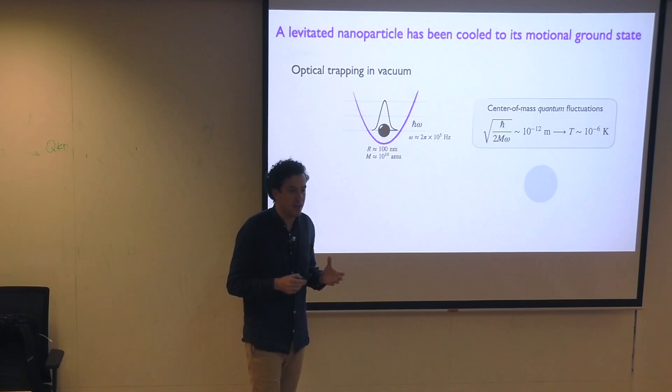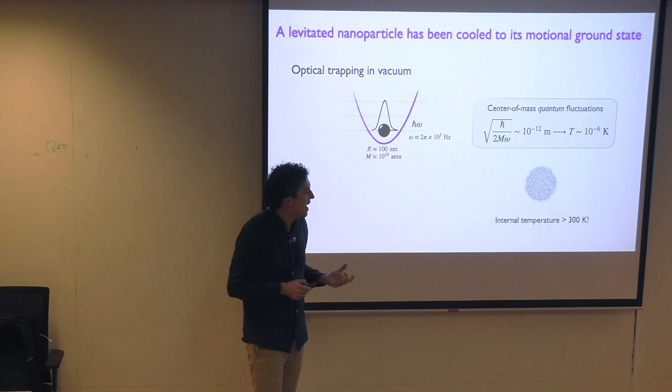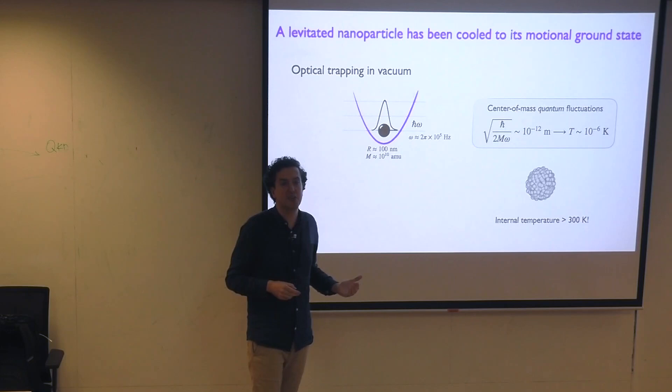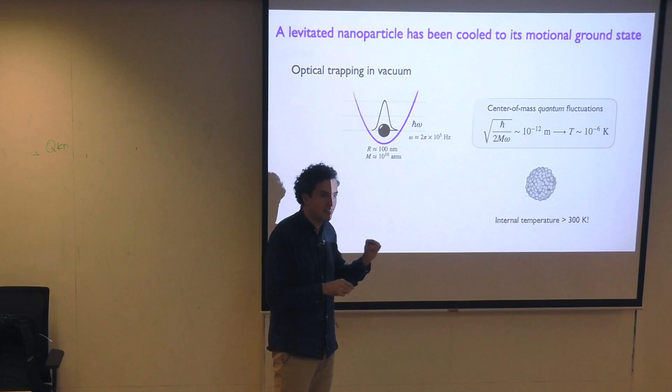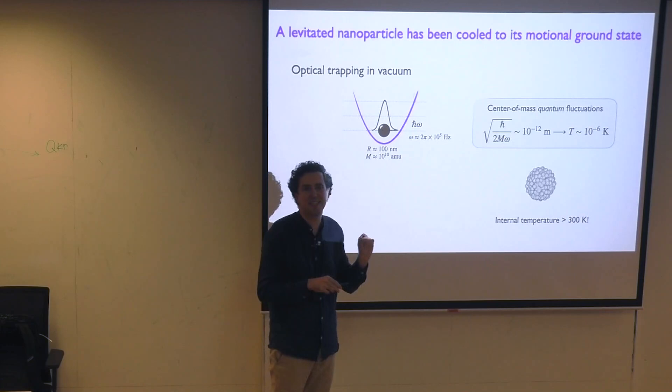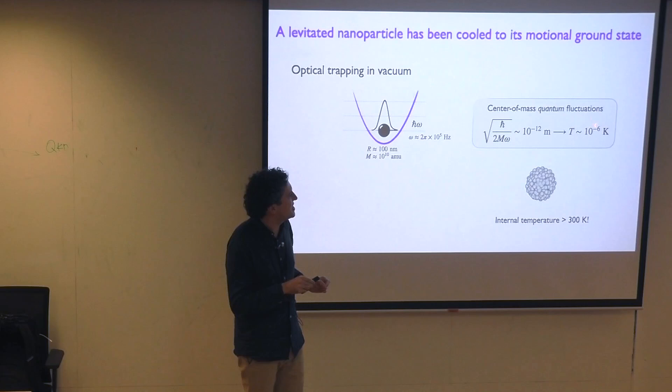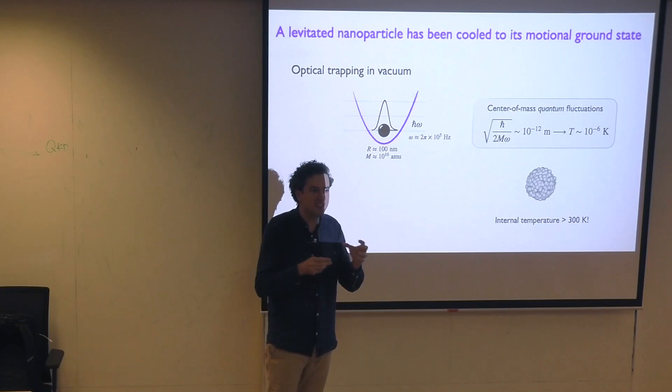Only two or three years ago were experimentalists able to really cool down the center-of-mass motion of this glass nanoparticle to the quantum regime — to this extremely small level of center-of-mass fluctuations. This is actually very very spectacular: the particle has a center of mass localized to such a tiny scale — even smaller than the size of an atom — but the particle itself is pretty hot because it's bathed in laser light. In experiments the particle is at 300 kelvins, meaning the center of mass is nine orders of magnitude colder than the internal temperature of the object, and they don't talk to each other.